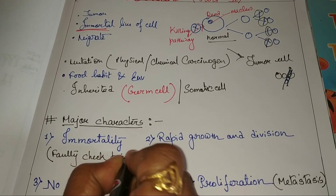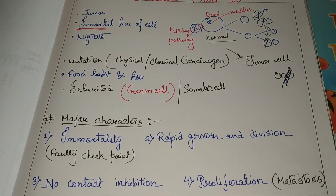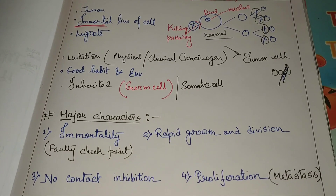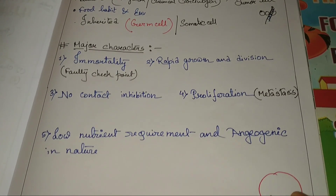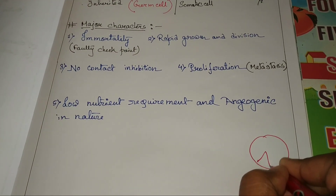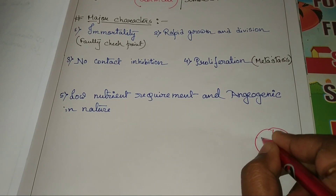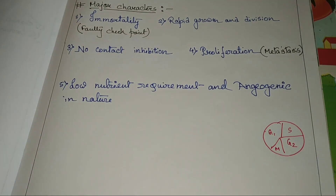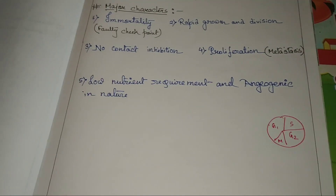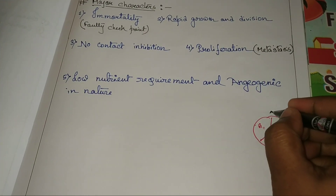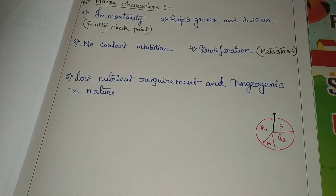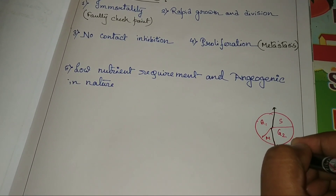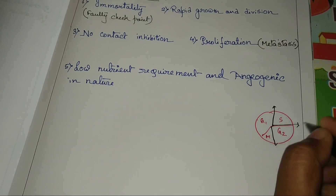What is a faulty checkpoint? We all know what a checkpoint is. If we discuss the cell cycle, we see that if this is the M phase, this is G1, this is S, and this is the G2 phase. Checkpoints are present between G1 and S, G2 and M, and S and G2.